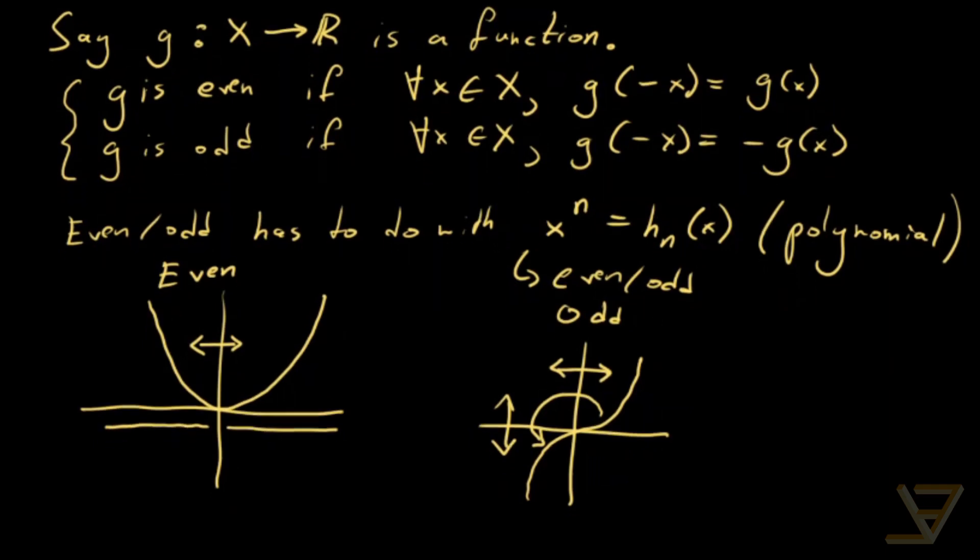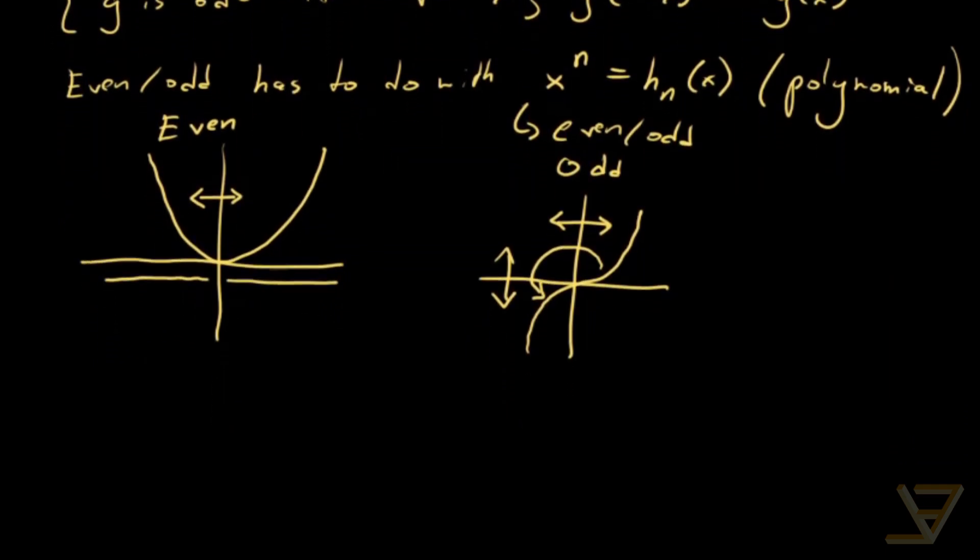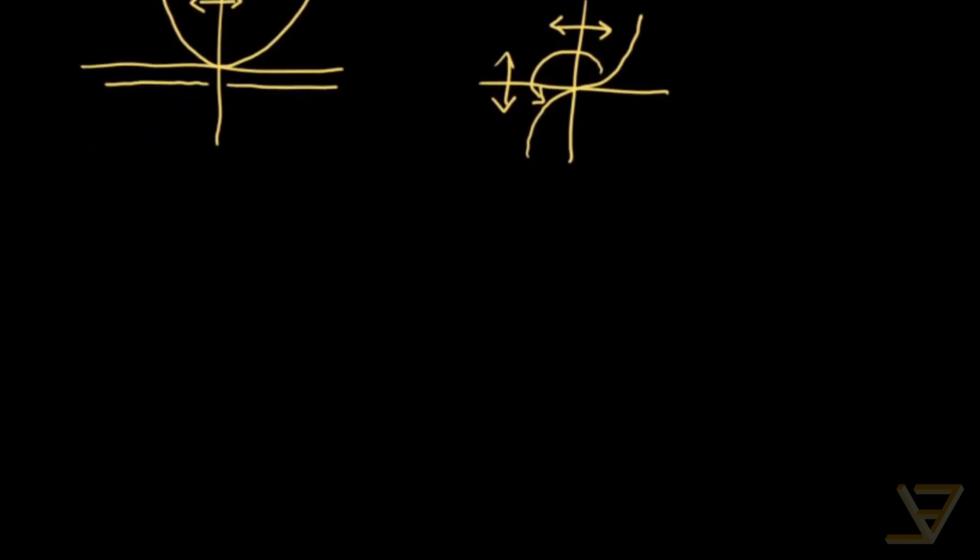So now that we have the preliminaries out of the way, let's prove that the even function f_e and the odd function f_o actually exist and are unique.